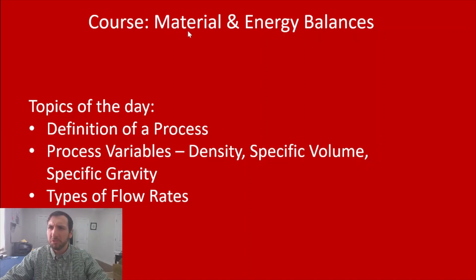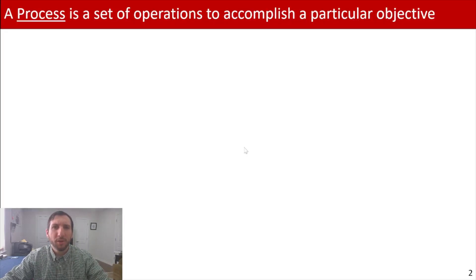So to start, what is a process? A process is a set of operations to accomplish a particular objective. For example, maybe you want to purify some water, make some orange juice concentrate, make a cancer therapeutic to help treat people, or maybe we're making a spirit, purifying our alcoholic solution. Whichever the case may be, all of these are examples of a process because I'm performing a set of operations to complete an objective.